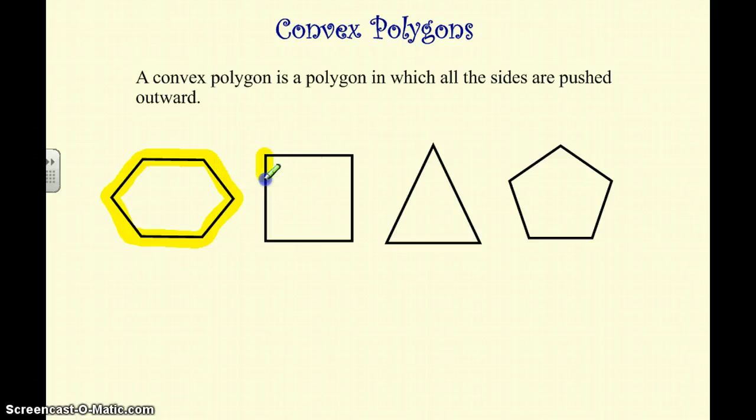So if we look at the square, same thing. All the sides have been pushed outward. And triangle, same thing. All the sides have been pushed outward.